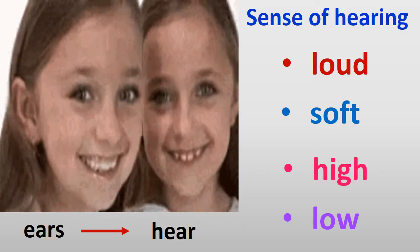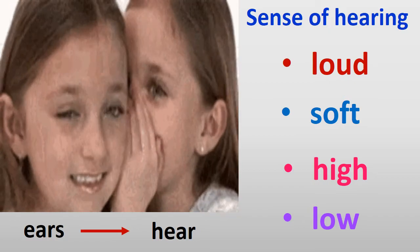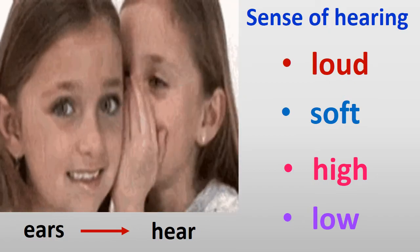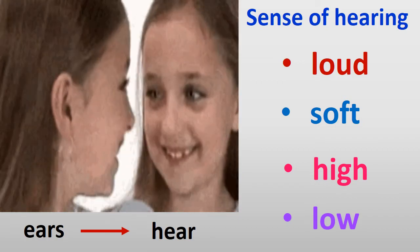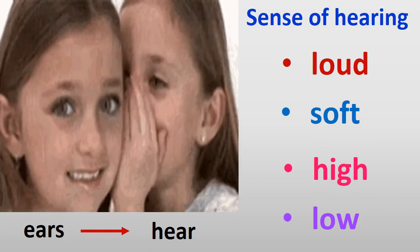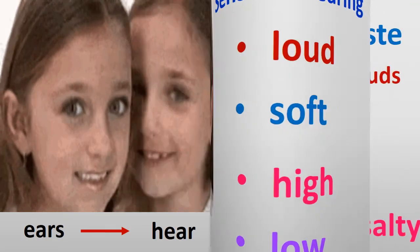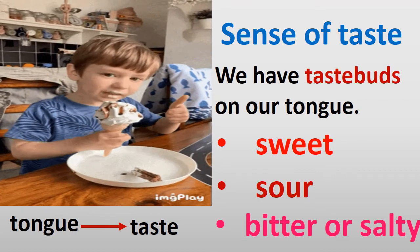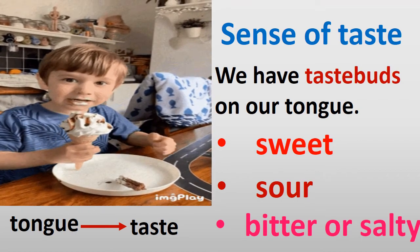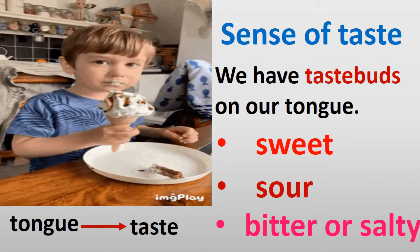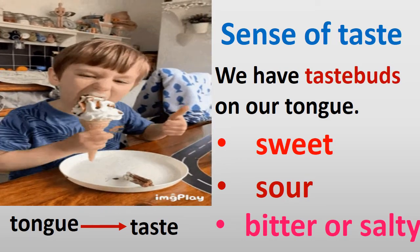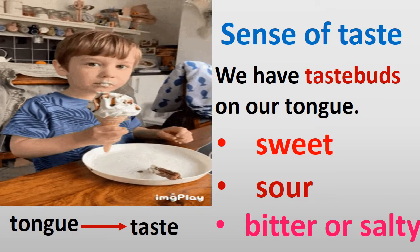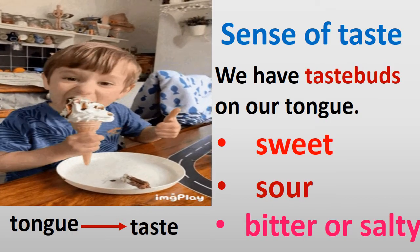Do you know why we have two ears? Because by having two ears, the brain figures out where a sound is coming from. We use our tongue to taste. We have taste buds on our tongue. What can our sense of taste tell us? Our sense of taste tells us if something is sweet, sour, bitter, or salty.